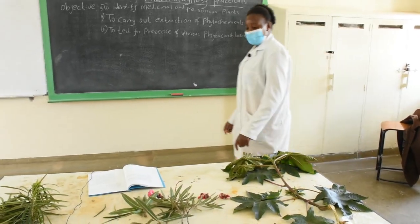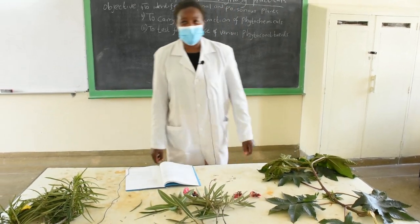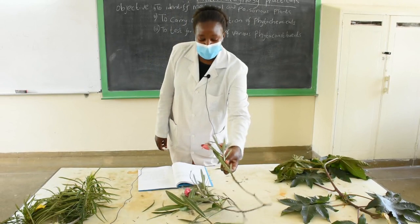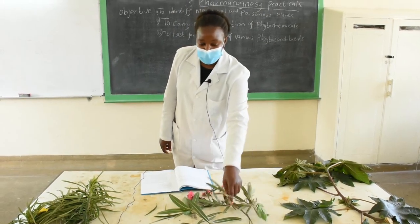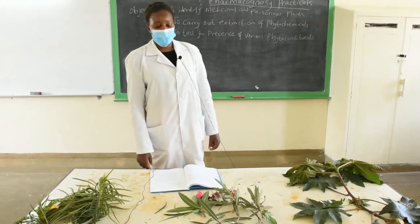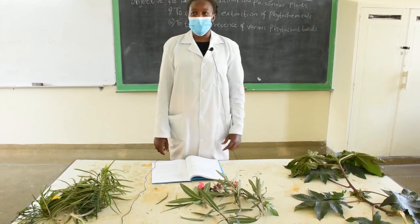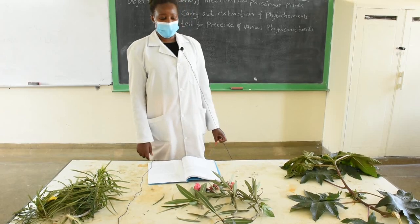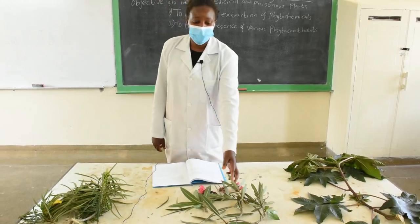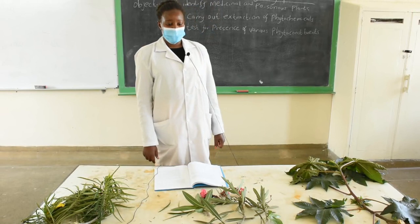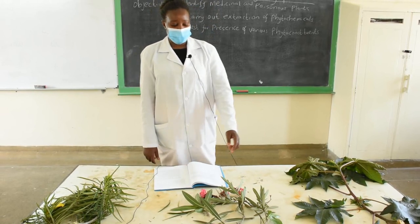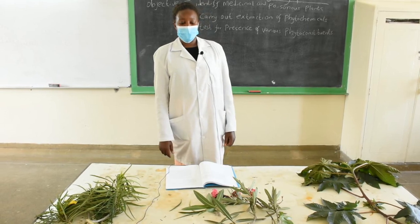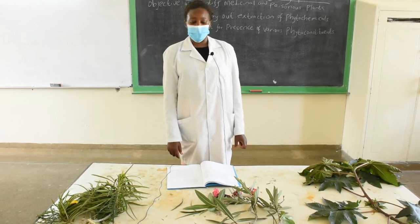The next plant is Nerium oleander, an ornamental plant as we can see from the beautiful flowers. It contains cardiac glycosides that are useful as medicines for managing cardiac failure, but in high doses they are very toxic. They are associated with various toxicity in the body — in the gastrointestinal system, the central nervous system, or the cardiovascular system.